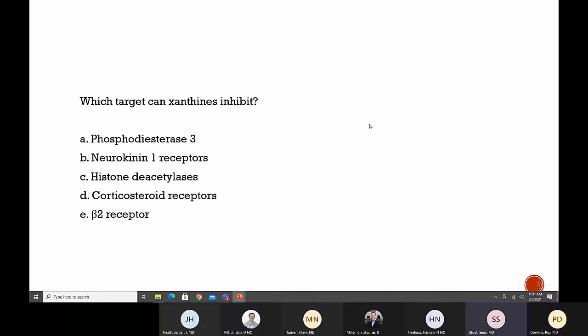Next, which target can xanthines inhibit? A, phosphodiesterase-3, B, neurokinin-1 receptors, C, histone deacetylases, D, corticosteroid receptors, and E, the beta-2 receptor. This can be a little bit tricky. The actual question in Middleton's said 'influence,' but I switched to 'inhibit' so there should only be one answer. Is it A? A, it is A, yes. Phosphodiesterase-3. If we could be asked about other possible mechanisms, histone deacetylases could be an option, and also the adenosine receptor antagonism.